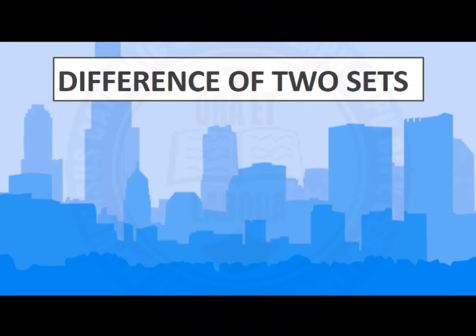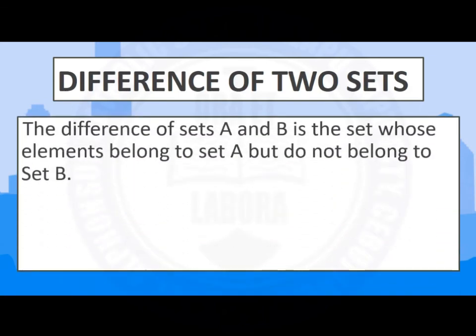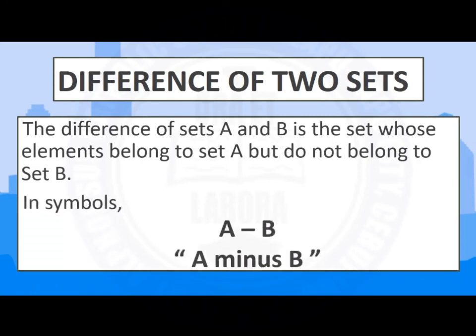Based on the example, we can have the definition of difference of two sets. The difference of sets A and B is the set whose elements belong to set A but do not belong to set B. In symbols, we write it as A minus B.